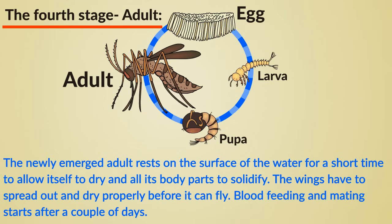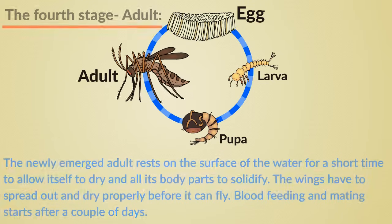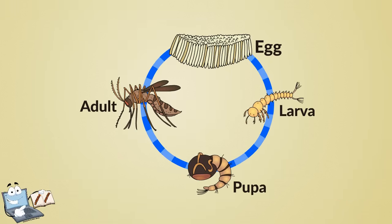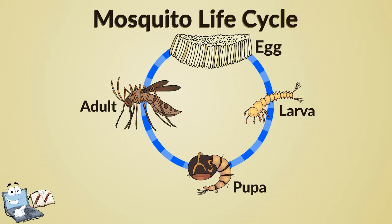The wings have to spread out and dry properly before it can fly. Blood feeding and mating starts after a couple of days. This is the full diagram of a mosquito life cycle.